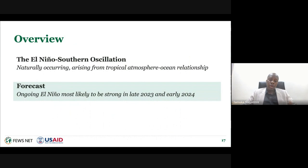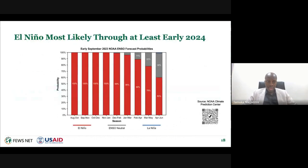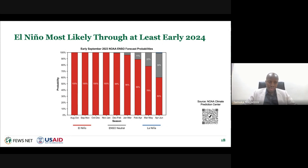The forecast is telling us that for the current El Niño going into late 2023 and early 2024, an aggregation of several models shows strong agreement. Looking at three-month periods, for the December to February period, 99% of models indicate it's likely to be an El Niño. By March, April, May, there's a 78% chance of El Niño.